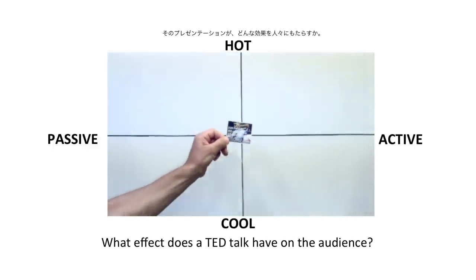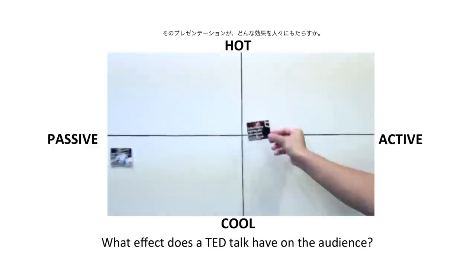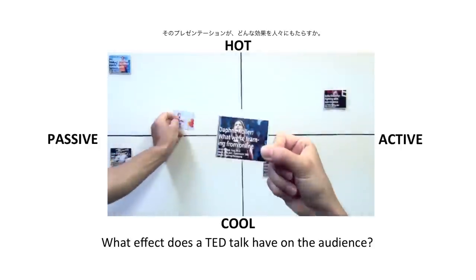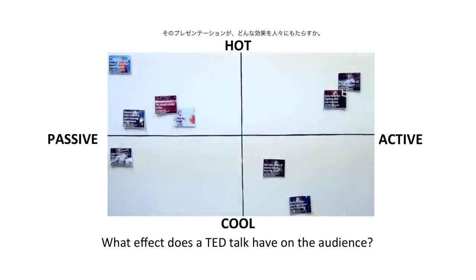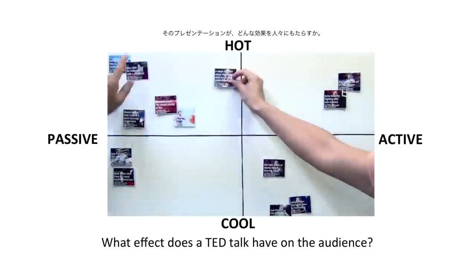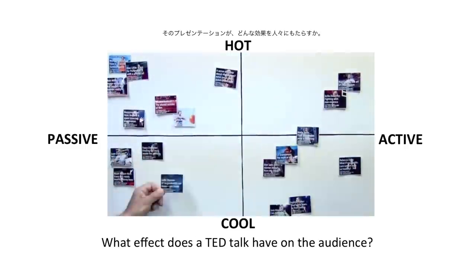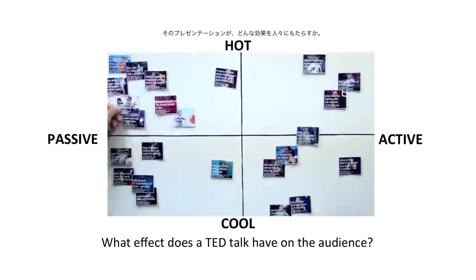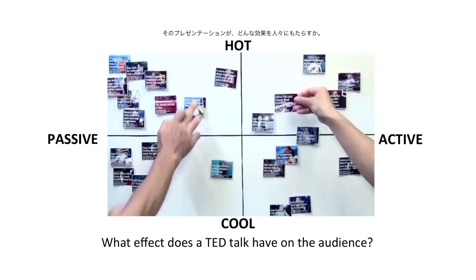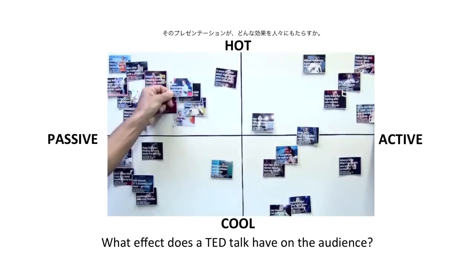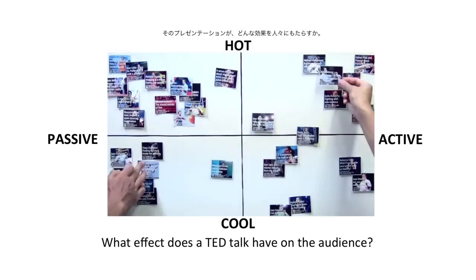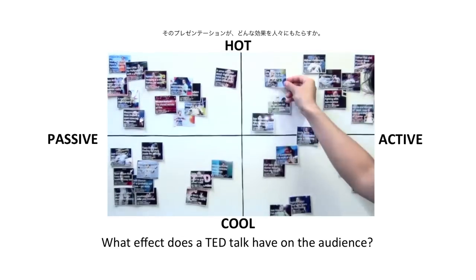I want to give you an example of how you can actually use the map. A colleague of mine made a map of the most recent TED presentations available online. The question we asked was: what effect do the TED presentations have on the audience? Was it a light topic — meaning hot? Was it a heavy topic — meaning cool? Was it a topic just to take in and learn from — meaning passive? Or was it something that called you to get into action — meaning active? As you can see, we put in the TED presentations one by one, and it's very easy to just choose whether they go up, down, left, or right.